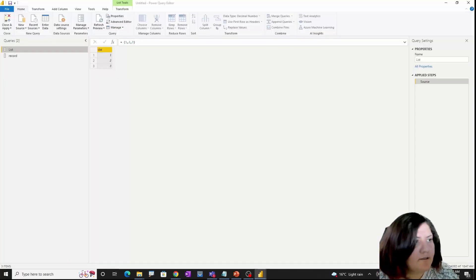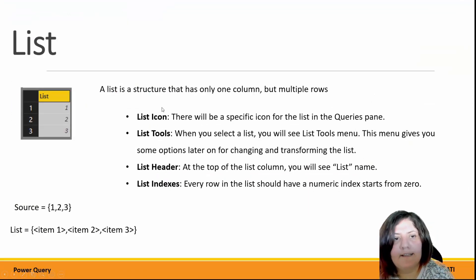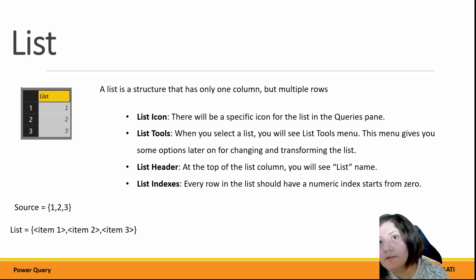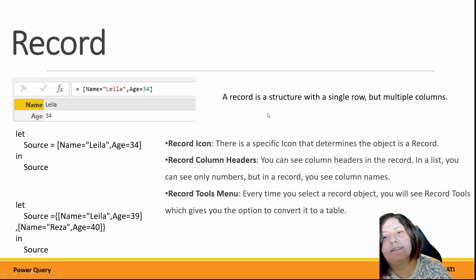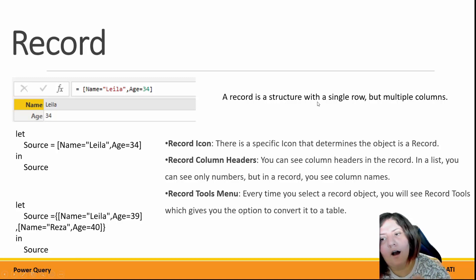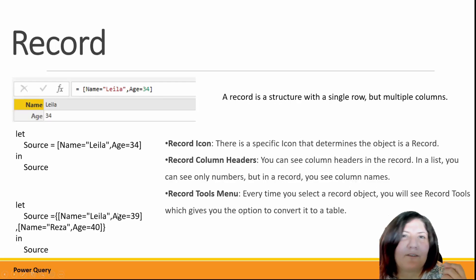To summarize so far: a list is a structure that has one column and multiple rows, has its own icon, you can apply changes to it, and convert it to a table. A record is the reverse — a single row with multiple columns, meaning you can have different object types in a record such as numbers or integers, whereas in a list it's better to have items of one consistent type.